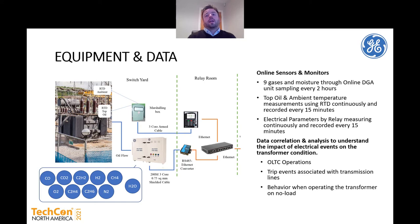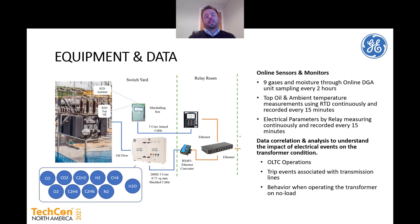There were a few online sensors attached to the transformer: a nine-gas-and-moisture online DGA taking a sample every two hours; RTDs doing continuous measurement of top oil and ambient temperature recorded every 15 minutes; and electrical parameters being recorded by the relay, measuring continuously and recording findings every 15 minutes. Data correlation analysis was required to understand the impact of electrical events on the transformer's condition — specifically the OLTC operations and whether tap position played any significant role in the gas generation being seen, as well as the trip events associated with the transformer line captured by the relay.